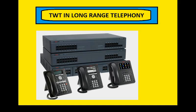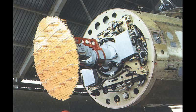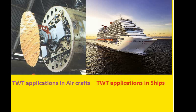First, TWT is used as a repeater amplifier in wideband communication links and coaxial cables, especially in long distance telephony. Second, due to the long lifetime of this tube, traveling wave tubes are used as power output tubes in communication satellites. Third, TWTs are used in airborne and shipborne pulsed high power radars, ECM, and ground based radars.